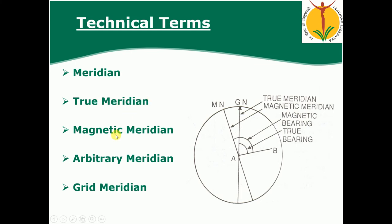Magnetic meridian is a direction shown by a freely suspended magnetic needle. Arbitrary meridian is any convenient direction that the surveyor chooses at the time of measuring the angle. Grid meridian refers to lines that some state agencies use, which are parallel to the true meridians.